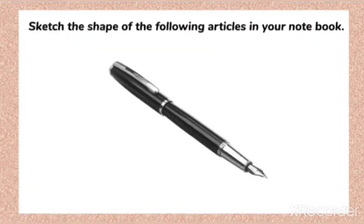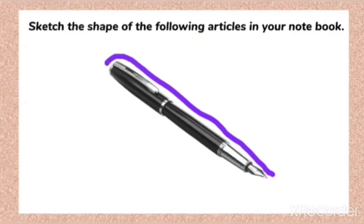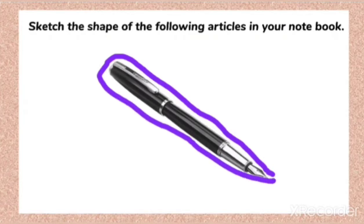Now first we'll be taking a pen. Sketch the shape of the pen in your notebook — all of you make use of a pencil to sketch the shape of the pen. I'm making use of a color pen to make a sketch of this. Here I could make the sketch of the pen. You will be using a pencil to make the shape. We could make the shape of the pen.